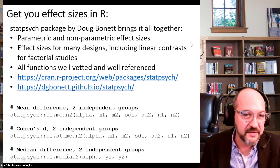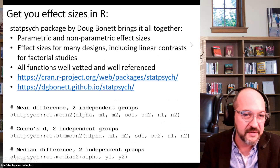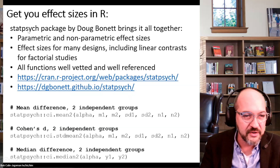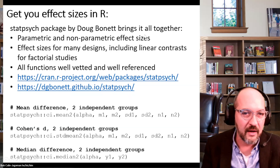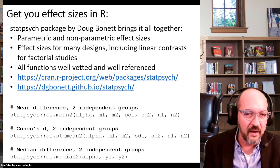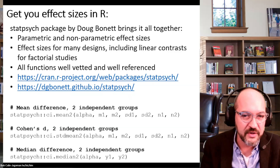You can also do this in R — there's a new package called statpsych developed by Doug Bonett, available on CRAN. It covers a wide range of effect sizes, parametric and non-parametric, simple and complex designs, with well-vetted and well-referenced functions. I've got a link on my resource page showing how to use it to analyze this data.